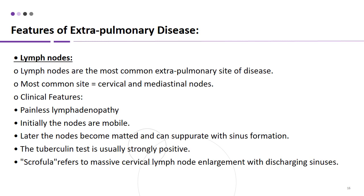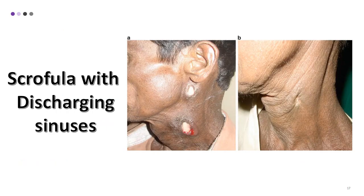Extra-pulmonary involvement can occur in the lymph nodes, gastrointestinal tract, pericardial cavity, bones and joints, and central nervous system. The lymph node is the most common extra-pulmonary site, with cervical and mediastinal lymph nodes most commonly affected. Clinical features include painless lymph node enlargement — nodes are mobile initially, then become matted and can suppurate with sinus formation. The tuberculin test is usually strongly positive. Scrofula refers to massive cervical lymph node enlargement with discharging sinus; the picture shows cervical lymph node enlargement with suppurative pus from the sinuses.